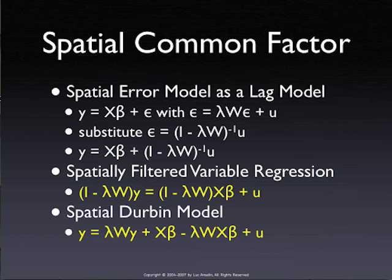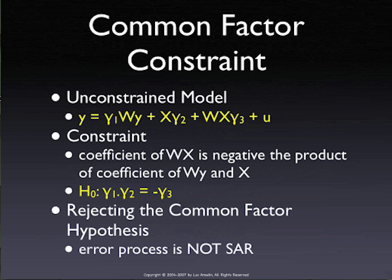The unconstrained model is the model where we do not impose any restrictions — simply γ₁ for the spatial lag, γ₂ for X, and γ₃ for WX. The constraint is that the first coefficient times the second coefficient has to equal the negative of the third coefficient. We estimate them unconstrained and then test the extent to which the constraint holds. If the constraint is rejected, the implication is that the error process is not spatial autoregressive. If the constraint is not rejected — meaning the constraint holds — then we're fine.